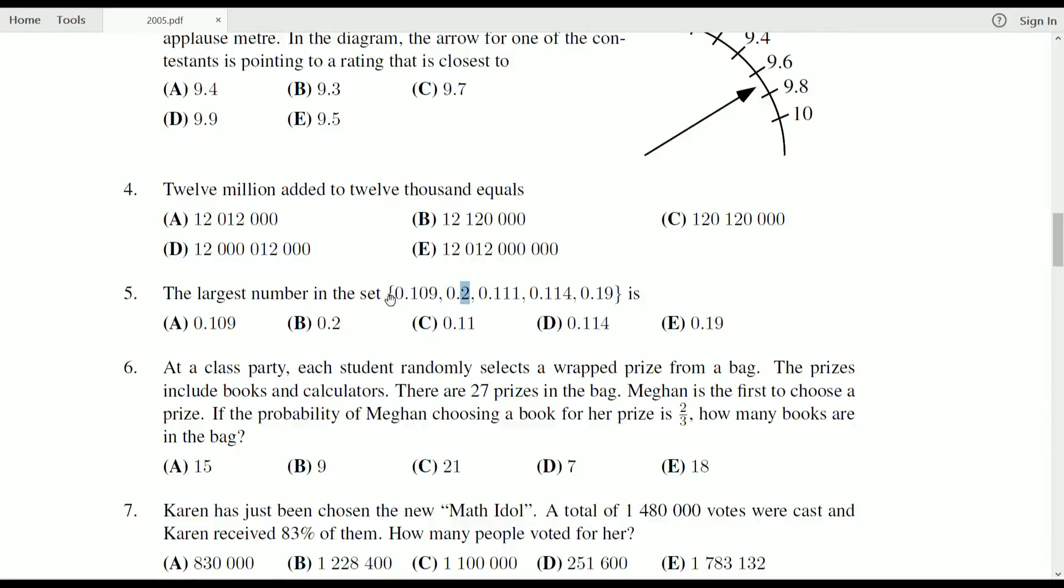The way we order our numbers is we take a look at the furthest leftmost digit and rank them in that way. So all of these have a zero for their leftmost digit, then most of them have a one for the next digit, except 0.2. Two is greater than one, so it's going to be the largest one, and that's B.